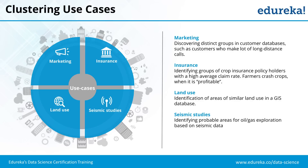Similarly in earth studies, identifying probable areas of oil and gas exploration is based on seismic data. It's not only for oil and gas — it's also used for identifying shale oils and seeing below the crust where shale oil is available. It's also helpful in identifying seismic zones, so that proper guidelines are given for building structures in those zones. Machine learning is being used in all these areas.